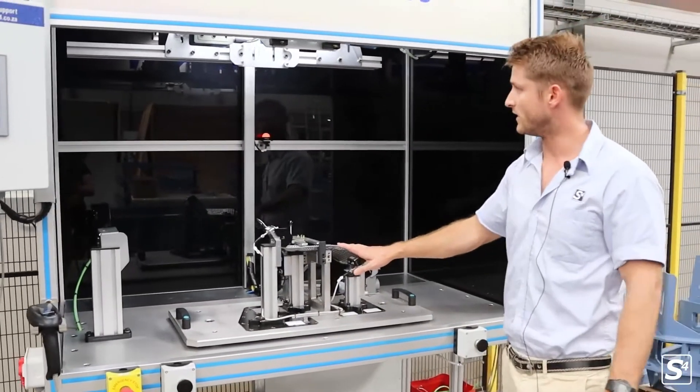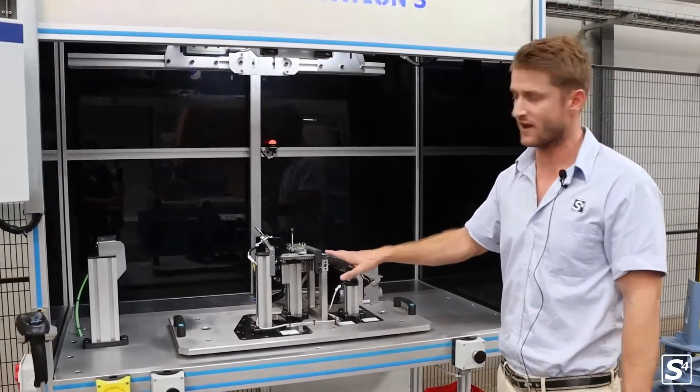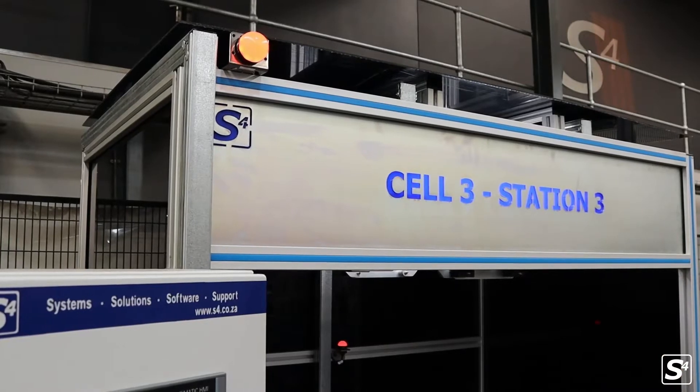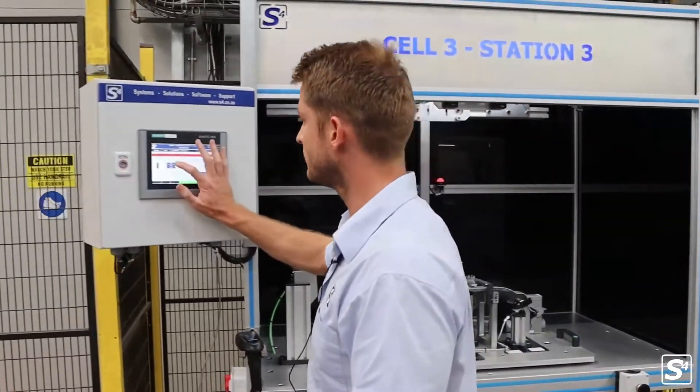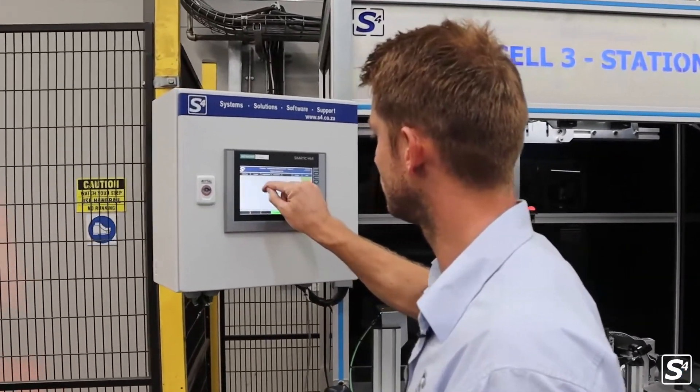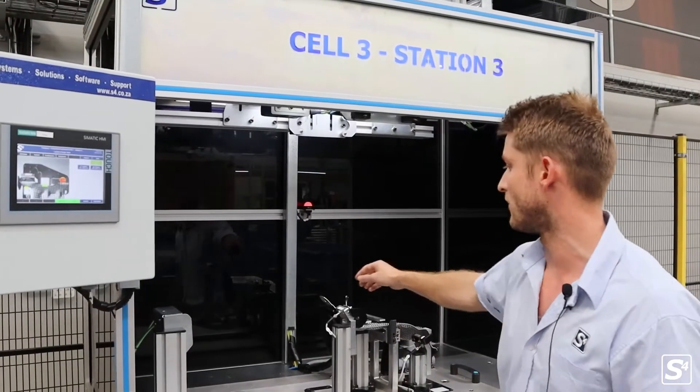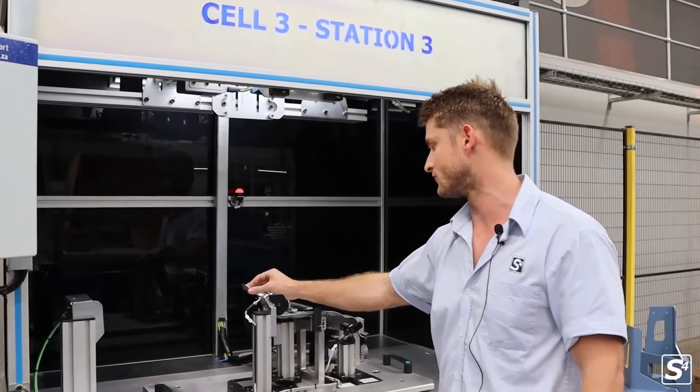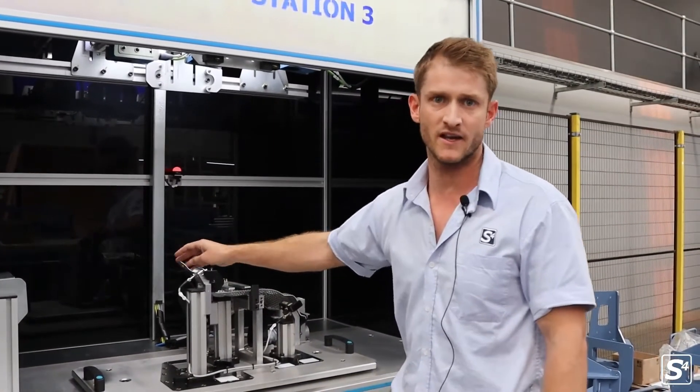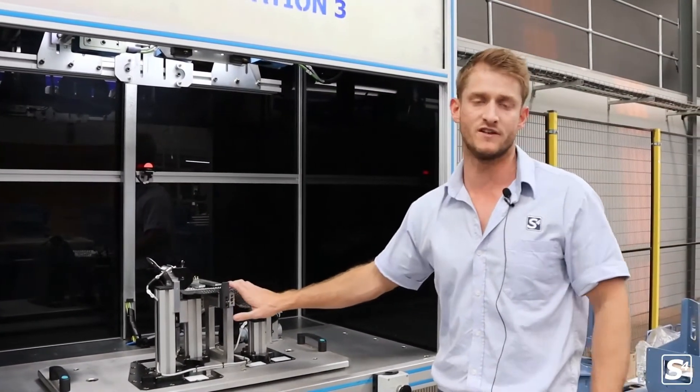In this particular case we perform the inspection and the part failed. There is an indication for failure and the reason being is that we are missing the pin on the push pin. So the operator has forgotten to insert the pin and this part has now failed the quality control process.